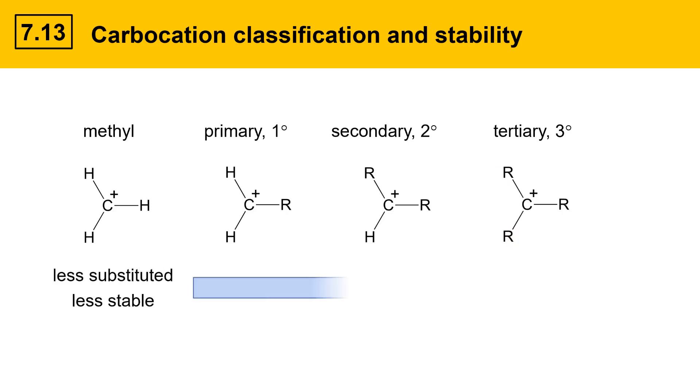Stability goes from less substituted and less stable to more substituted and more stable. The reason is that each r group contributes a bit of electron density to the electron poor carbocation carbon helping to stabilize it a little bit. The r group contributes a bit of electron density to help stabilize the carbon. Hence, primary carbocations are a bit more stable than methyl.